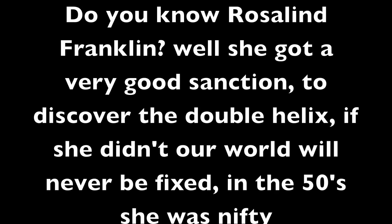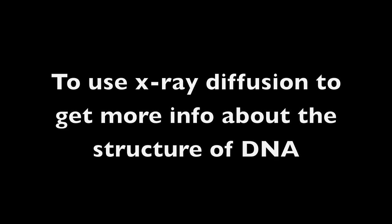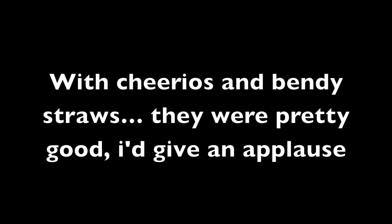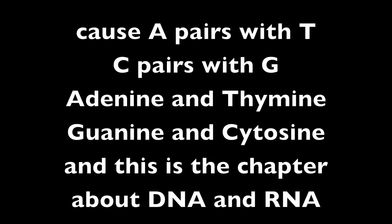Do you know Rosalind Franklin? Well she got a very good sanction to discover the double helix. If she didn't, our world would never be fixed. In the 50s she was nifty to use x-ray diffusion to get more info about the structure of DNA. Watson and Crick gave Franklin the okay, and they made what we did the other day — making models of DNA with Cheerios and Bendy straws. They were pretty good, I give an applause. Cause A pairs with T, C pairs with G, adenine and thymine, guanine and cytosine, and this is the chapter about DNA and RNA.